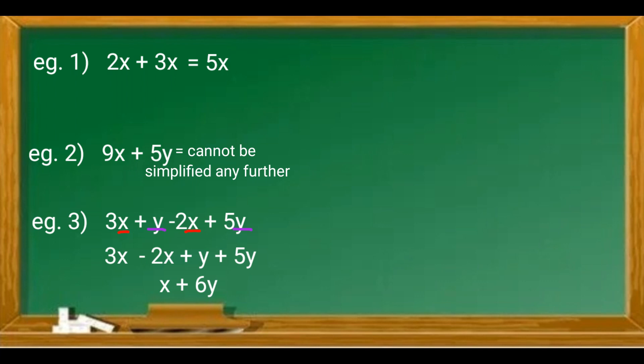3 - 2 = 1, so you get 1x. The 1 is understood. And 1 + 5 = 6, so 6y. The answer is x + 6y.